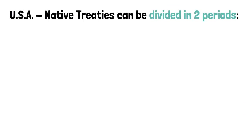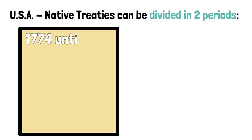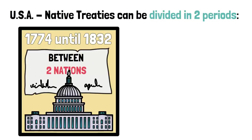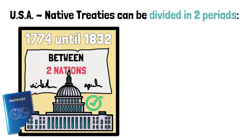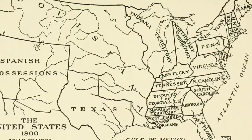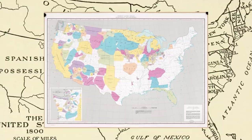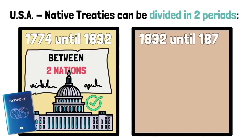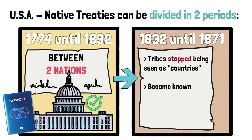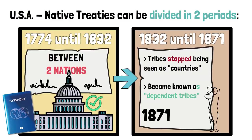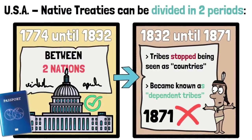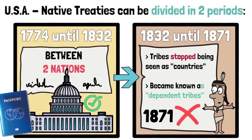Treaties between the US government and Native Americans have to be divided into two time periods. From 1774 until 1832, they consisted of treaties between different nations — in the same way the US negotiated its independence with the British, they were negotiated, mutually signed, approved by Congress, and non-Native citizens needed some type of passport to cross over into Native lands. Effectively, it was as if there were several countries within what is now the continental United States. But from 1832 to 1871, this changed, and Native American tribes stopped being considered countries, now being seen as domestic dependent tribes included within the United States. And in 1871, treaties altogether came to an end as the US House of Representatives stopped recognizing Native tribes as individual nations.